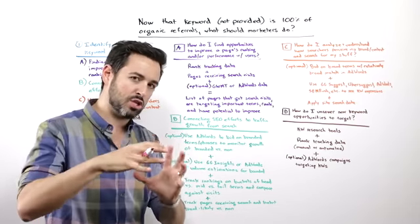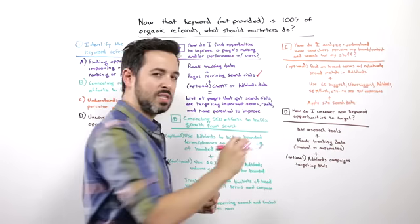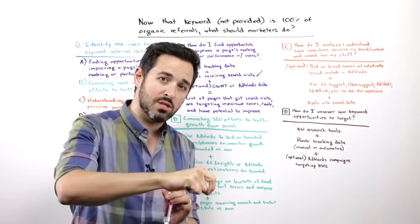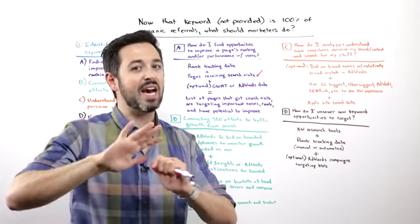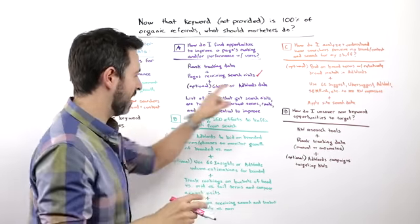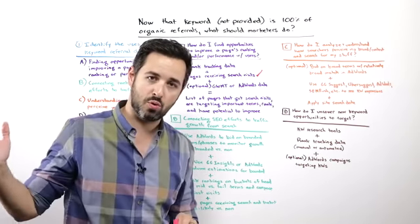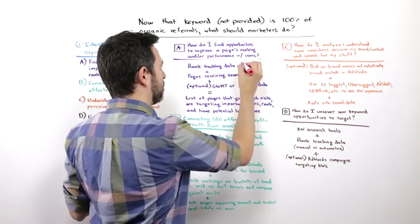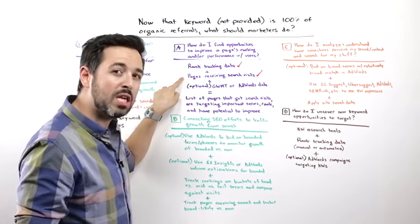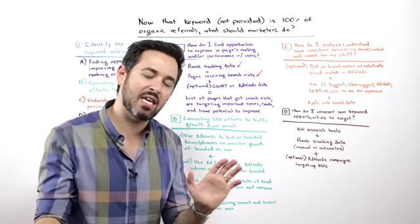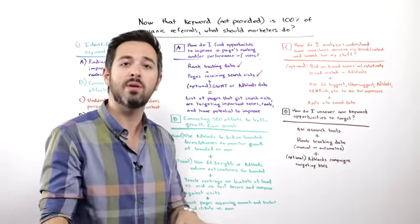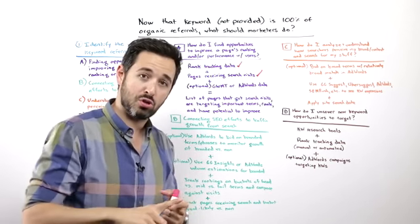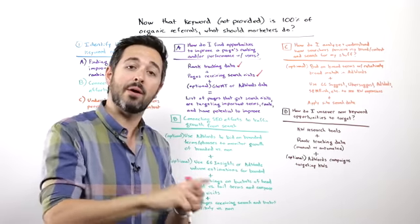Well, thankfully, we can use the connection, the intersection of a few different sources of data. So pages that are receiving search visits is a big one, and this is going to be used throughout. Instead of looking at keyword level data, we're going to be looking a lot at page level data. Which pages received referral visits from Google search? And thankfully, that's still something, still data that we do get and can get. And I think that'll likely stay with us because we can always see a referral source and we know which pages are loaded. So even if Google Analytics were to remove that, I think a third-party analytics provider would step in.